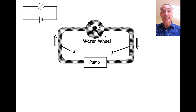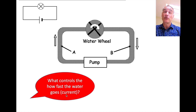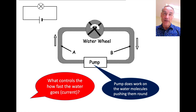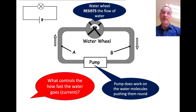We've also got a water wheel here, and that's going to model the bulb. What's going to control how fast the water flows, which is of course modelling the current? Well, the pump is going to do work on the water molecules - the stronger the pump, the faster the water moves. But also, the water wheel is going to resist the flow of water. If you've got a rusty water wheel, that's going to make the water flow slower because it's got a bigger resistance. So that's modelling resistance.